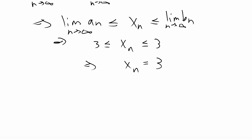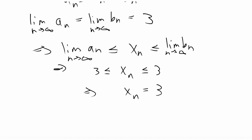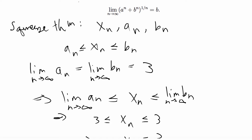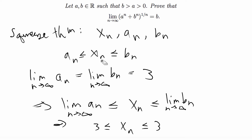So if you plug in a constant for 3, that basically means that if you squeeze x_n between two values and those two values are the same, then x_n has to be that value. So if you have the same limit for both the lower and upper bounds, then x_n has to equal that limit. Using that, we can solve this proof pretty simply.